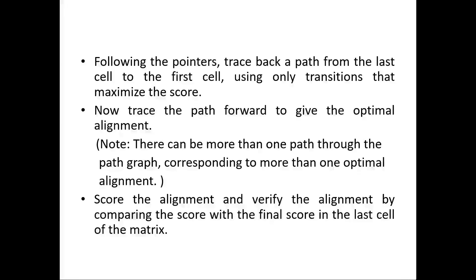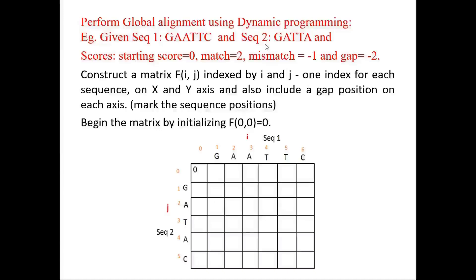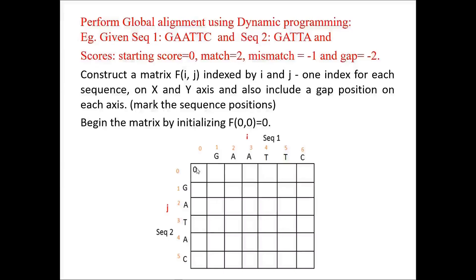We can run through these steps with an example. Two sequences are given to perform global alignment using dynamic programming. The scores given are: starting score of 0, match score of 2, mismatch score of minus 1, and gap penalty of minus 2. First, we need to construct a matrix Fij indexed with i and j — one index for each sequence in the x and y direction. A gap is included in the first position, then the sequences are written. Next, the position of the sequences has to be marked.